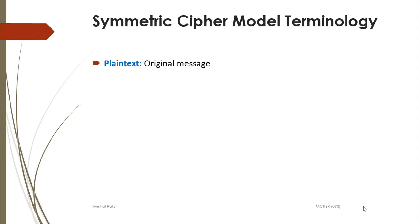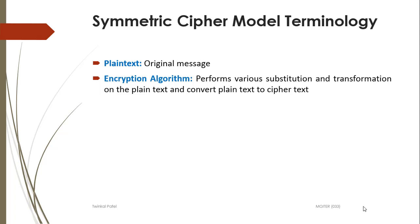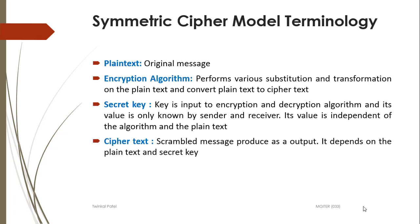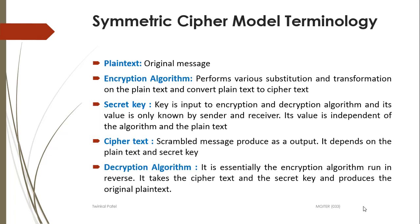Now we will see some of the terminologies. Plaintext is our original message. Encryption algorithm is the algorithm which performs various substitution and transformation on the plaintext to convert the plaintext to the ciphertext. Secret key is the key which is only known by the sender and receiver and which is used as an input to the encryption and decryption algorithm. Its value is independent of the algorithm and the plaintext. Ciphertext is a scrambled message produced as the output of the encryption algorithm, and its value depends on the plaintext as well as the secret key.